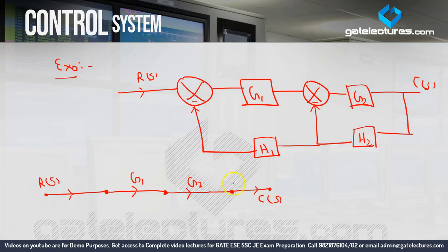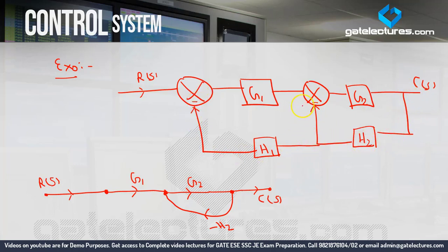Now you can see that from the takeoff point, for the first adder there is a negative feedback with gain minus H2. Looking carefully, the feedback starting from this point actually goes all the way to the first adder. For the second adder, H2 gain is applied there. But for the first adder (starting adder), the gain will be minus H1 times H2. So another path is generated with gain minus H1·H2.